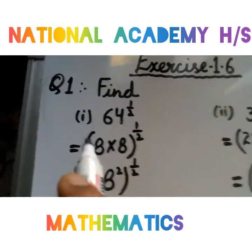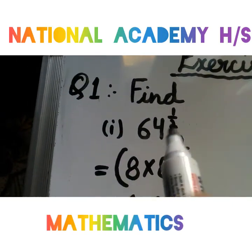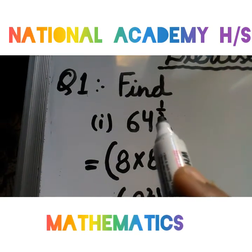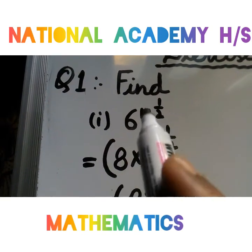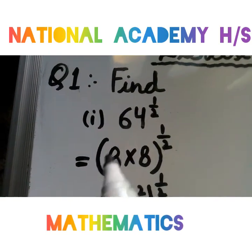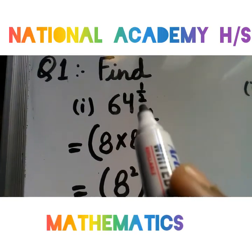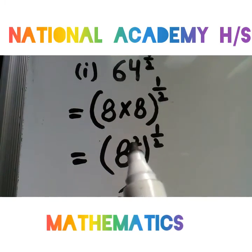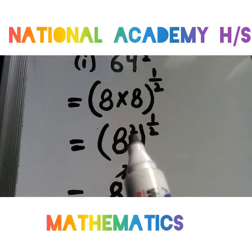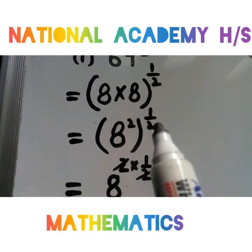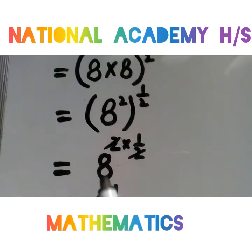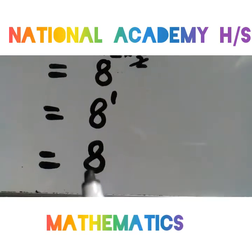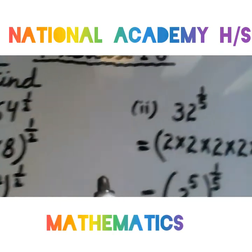यहां पे हमने इनको simplify करना है। First part है 64 की power 1 by 2। Denominator में जो है यानी 1 by 2 का 2 — इसको cancel करना है। उसके लिए 64 को factorize करना है: 8 into 8, यानी 8 की power 2। Whole power 1 by 2 — तो m into n rule से 2 into 1 by 2, 2 और 2 cancel, 8 की power 1 यानी answer है 8।